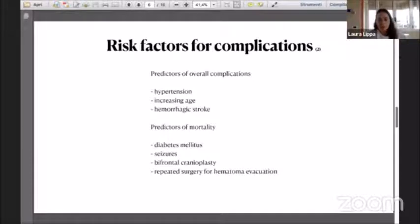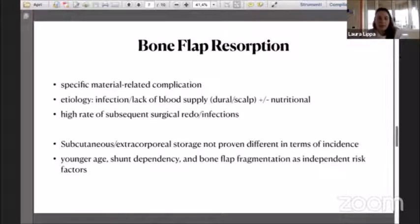About bone flap resorption, the risk factors for complications include predictors of overall complications. If we have a patient with hypertension, elderly, and with hemorrhagic stroke, it will predict a major rate of complications. Predictors of mortality are underlying disease already present, the bone flap cranioplasty, and also repeated hematoma evacuation.